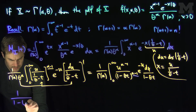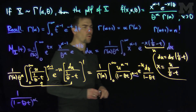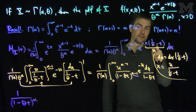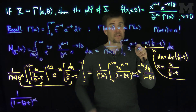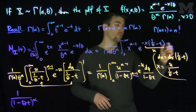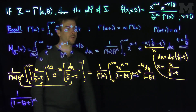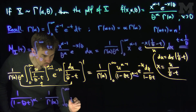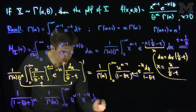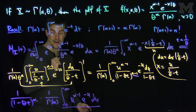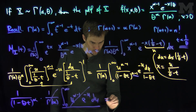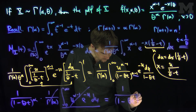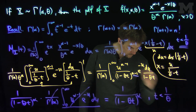That gives us one over one minus theta t to the power alpha. There is a restriction on how large t can be: if t is a little bit bigger than one over theta, the exponent becomes positive and the integral won't converge. So t must be less than one over theta. Then we have one over gamma of alpha times the integral from zero to infinity of u to the alpha minus one times e to the negative u du, which is exactly gamma of alpha. These cancel, and we have that the moment-generating function of a gamma random variable is one over one minus theta t to the power alpha, provided that t is less than one over theta.